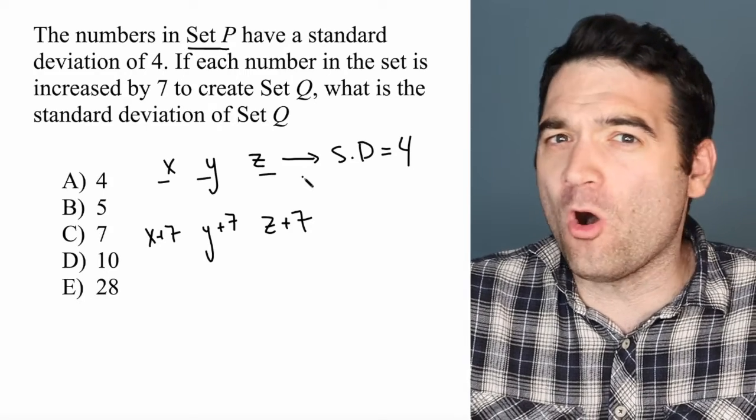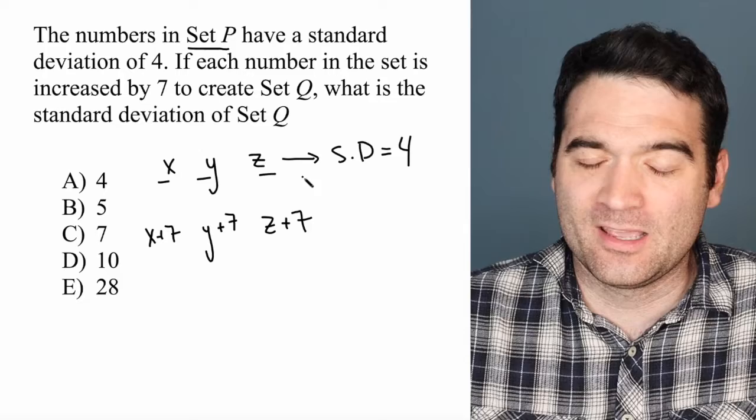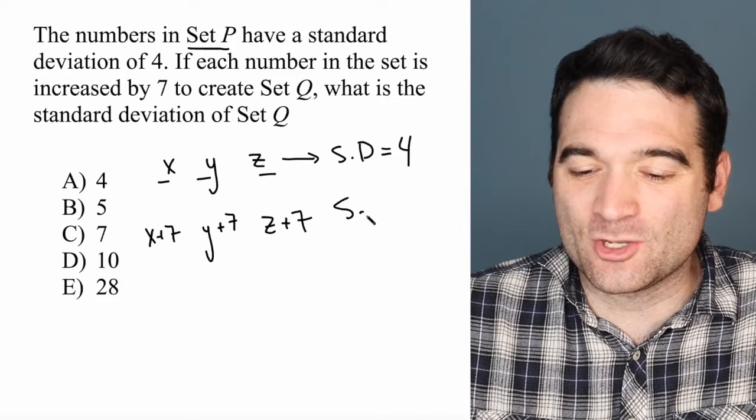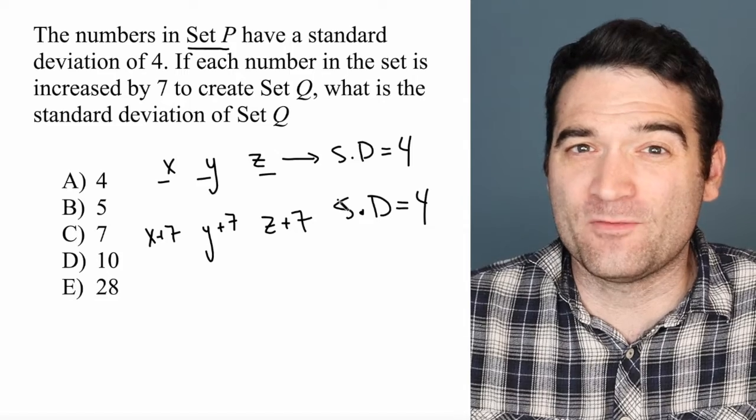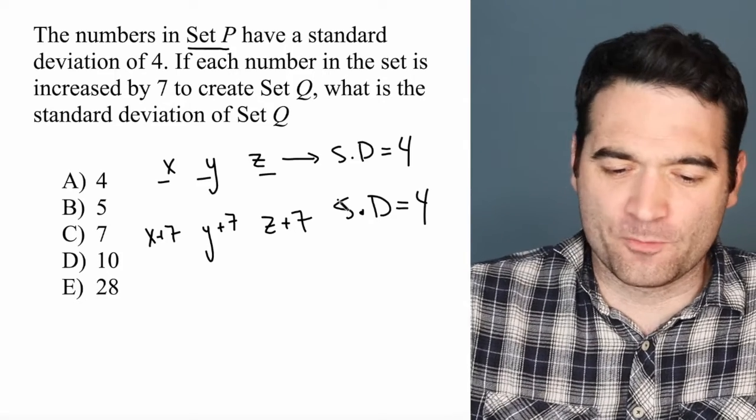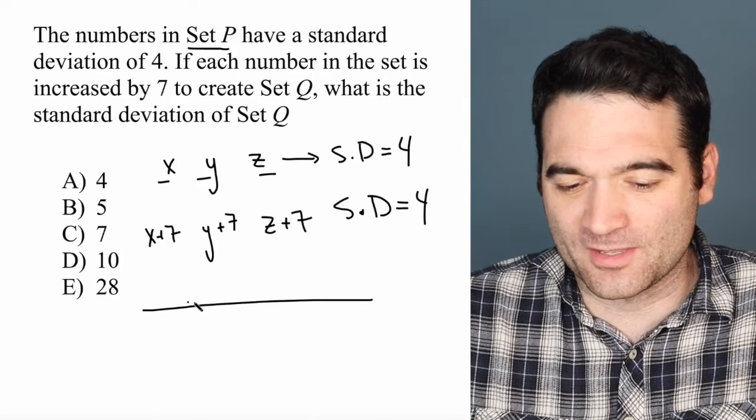Shifting all of the numbers up the number line means that the standard deviation has not changed. The standard deviation is still going to be 4 because just moving a group of numbers on a number line, we can illustrate this.